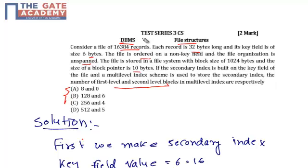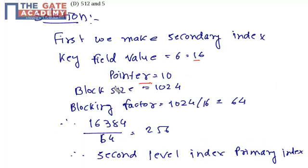Let's start the solution. First, we make the secondary index. Key field is 6 bytes, pointer is 10 bytes, so each index entry is 16 bytes total.